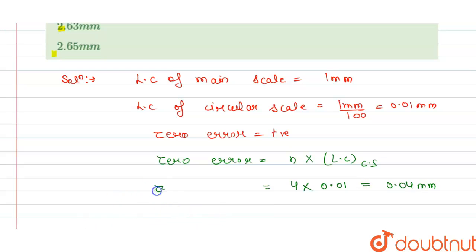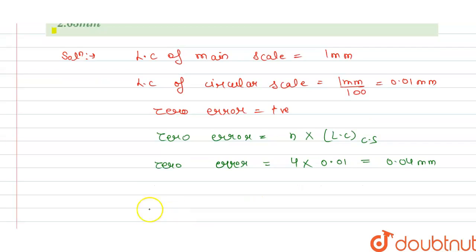This is our zero error here. And we have the reading equals to main scale reading plus circular scale reading, and this is multiplied by least count of circular scale.